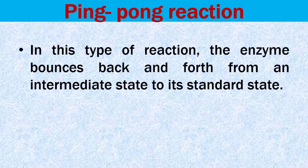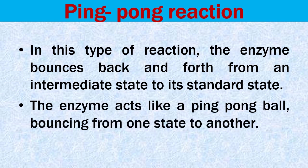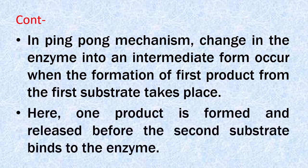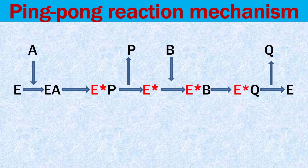In the ping pong or double displacement reaction, the enzyme bounces back and forth from an intermediate state to its standard state — that is why it is called ping pong, as the enzyme acts like a ping pong ball bouncing from one state to another. In the ping pong mechanism, a change in the enzyme to an intermediate form occurs when the first product is formed from the first substrate. One product is formed and released before the second substrate binds to the enzyme.